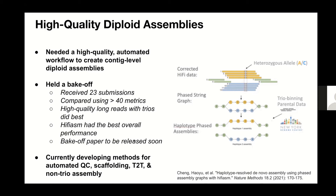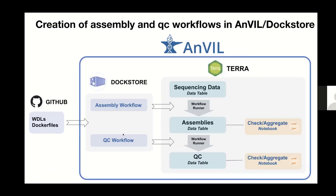We're currently developing methods for automated QC, scaffolding, and reaching a more finished T2T product for non-trio assemblies as well. We've established workflows using Anvil and Dockstore. On GitHub, we have WDL workflows and Docker files for public access. On Dockstore, we maintain assembly and QC workflows. On Terra, we have all sequencing data and data tables where you can run workflow runners and generate assemblies. We use Jupyter notebooks to check and aggregate this information, and all of this is housed on Terra.